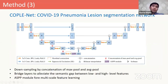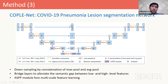For our network, it is a network based on the backbone of UNet with three extensions. First, we implement the down-sampling by concatenation of max pooling and average pooling, which will naturally need to double the channel numbers and will preserve more information compared with using a single max pooling. Also, we introduce some bridge layers to alleviate the semantic gap between low-level features in the encoder and high-level features in the decoder. Finally, we introduce an ASPP module in the bottleneck to learn multi-scale features in order to deal with lesions at various scales.